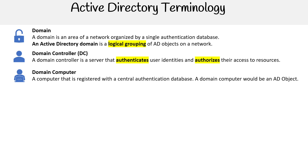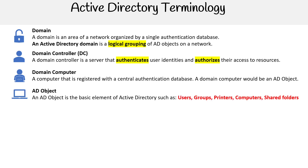We have domain computer, and it's not abbreviated as DC — but if it was, it'd be very confusing. A domain computer is a computer registered with a central authentication database, and it would be an AD object. An AD object is the basic element of Active Directory, such as users, groups, printers, computers, and shared folders. The idea is that we have these AD objects and organize them within our organization.